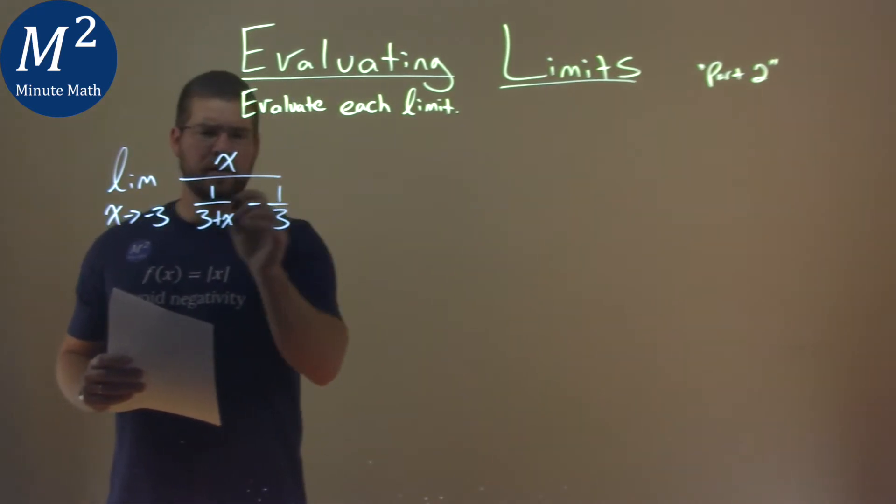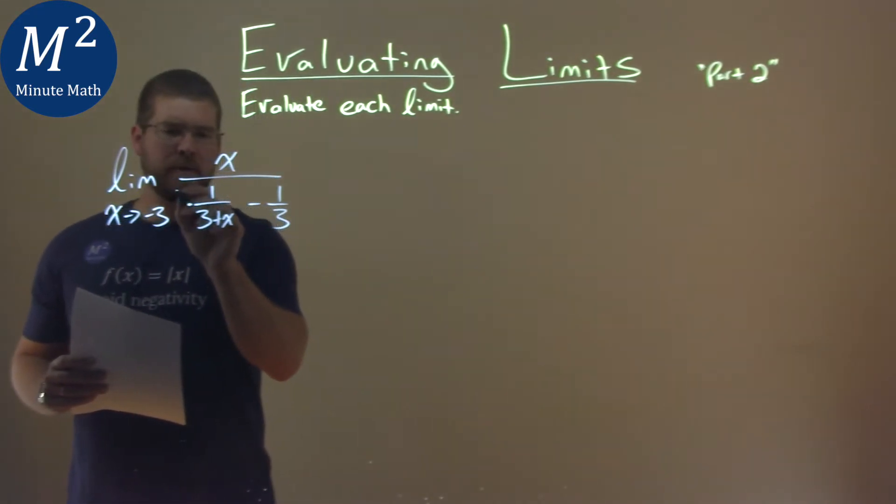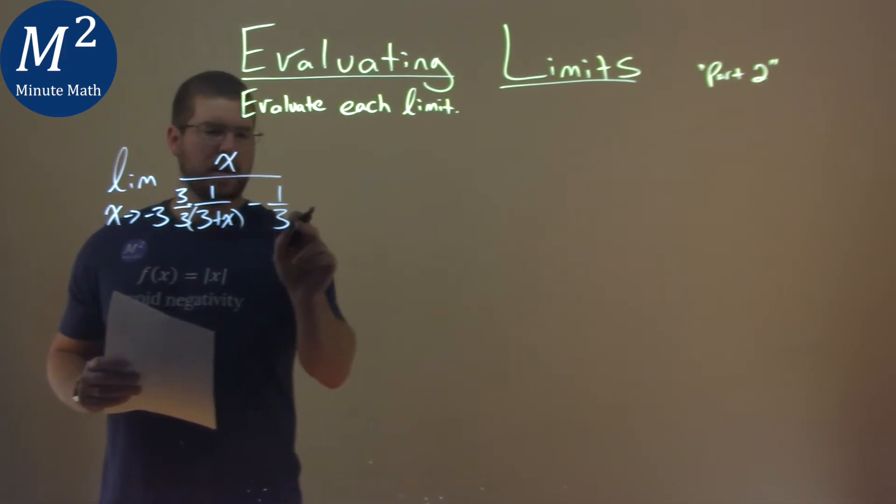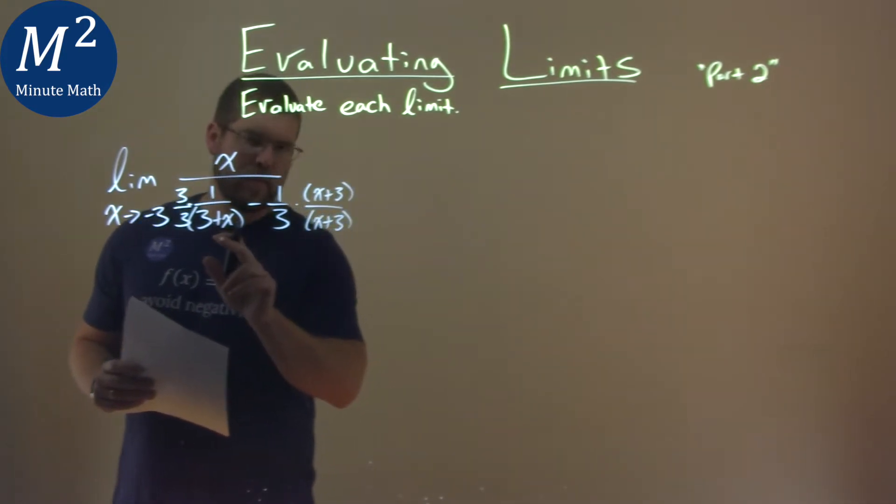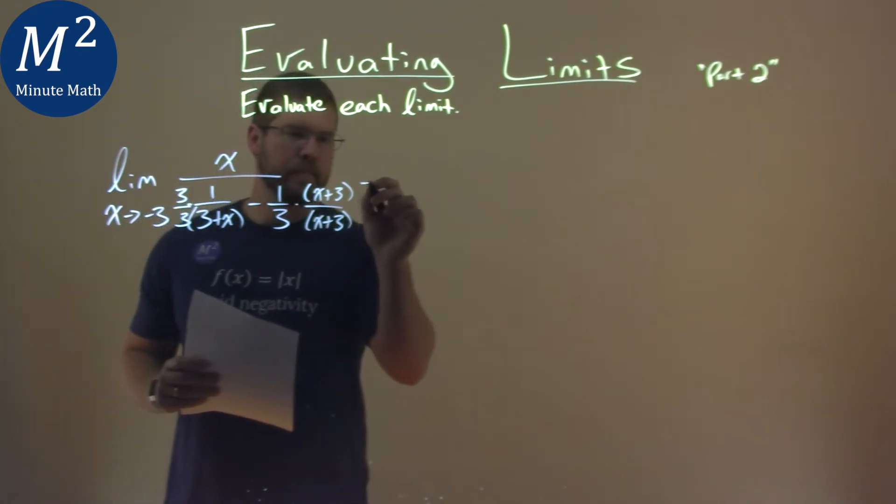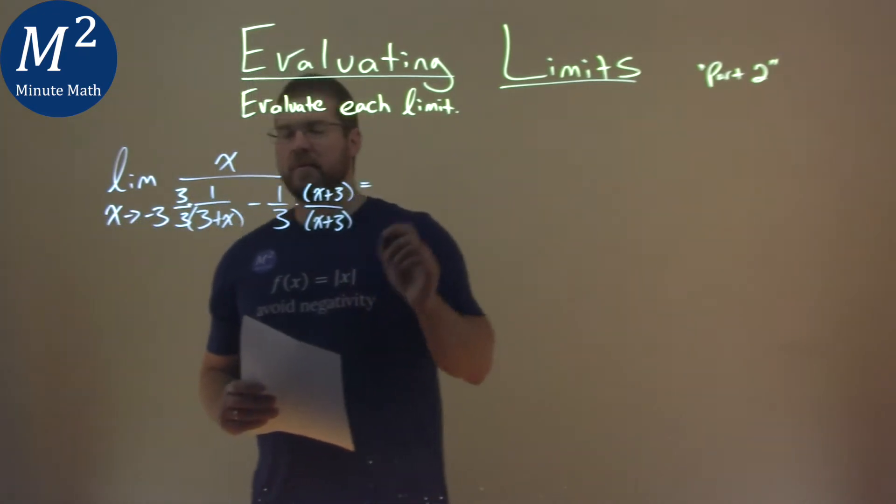So to find a common denominator, I'm actually going to multiply this fraction by 3 over 3, if you can see that right here, because that's this denominator, and this one I'm going to multiply x plus 3 over x plus 3. It's the same thing as 3 plus x. So now let's see what happens when we do that.